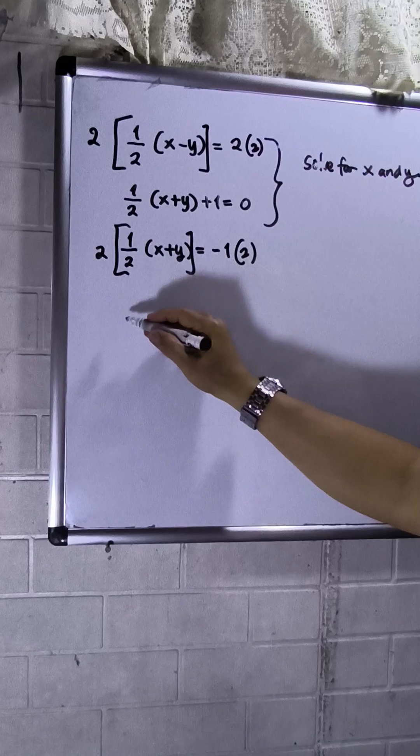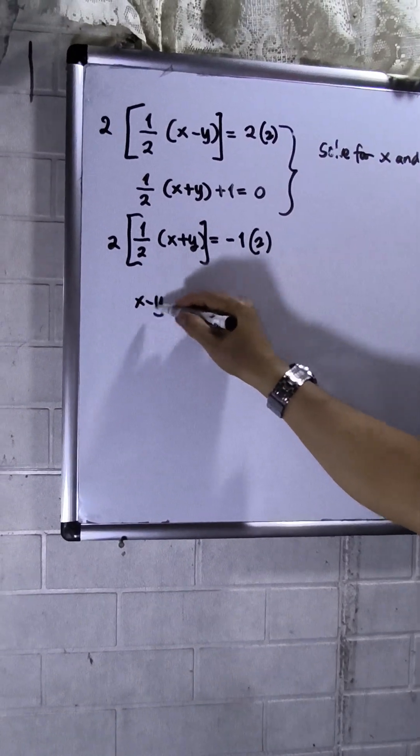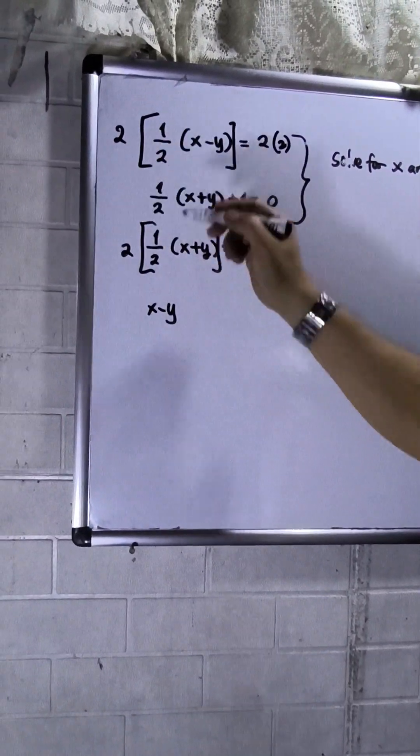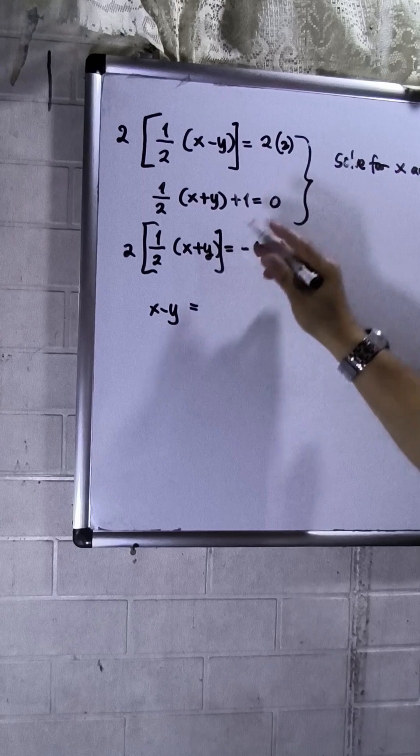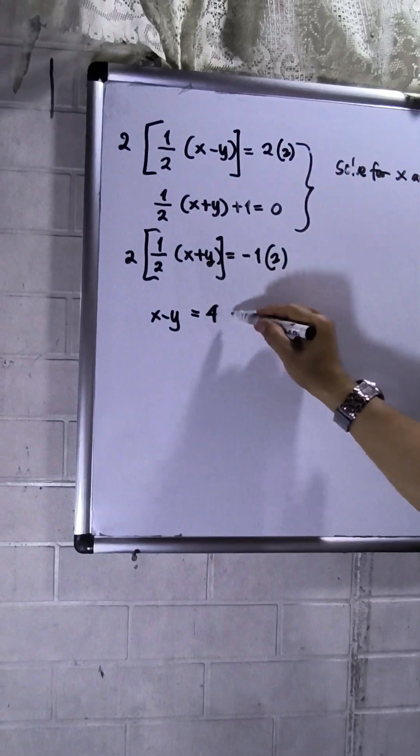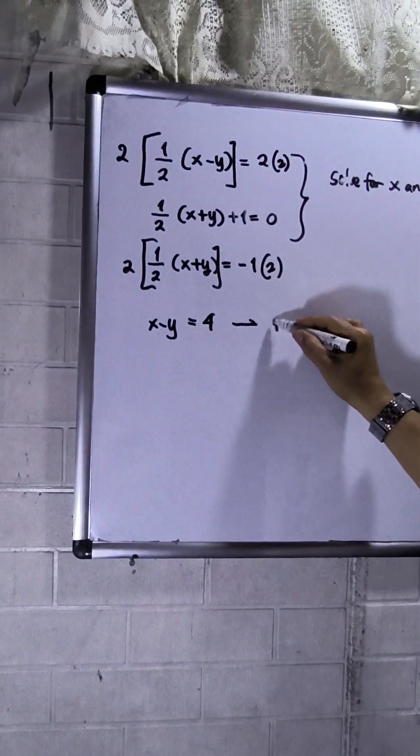So for equation 1 that will be x minus y. This will be crossed out. And then is equal to 4. So this is now my equation 1.